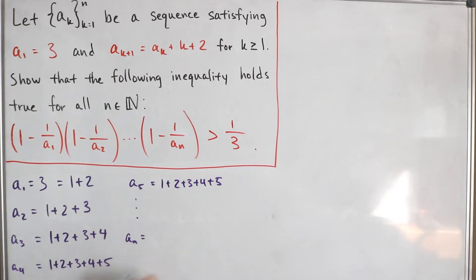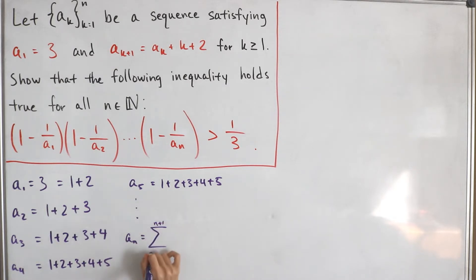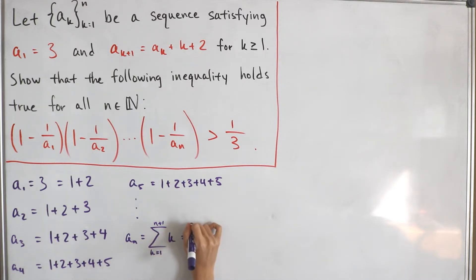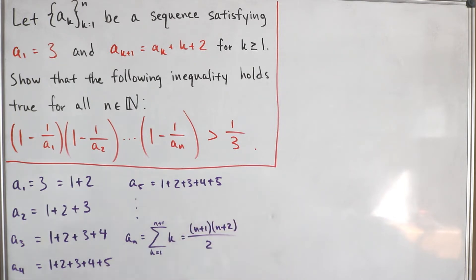Going all the way up to a sub n, we can see this is actually a partial sum — specifically the partial sum from k equals 1 up to n plus 1 of k. We know the closed form for that is equal to n plus 1 times n plus 2, all divided by 2.